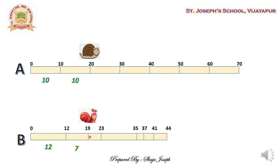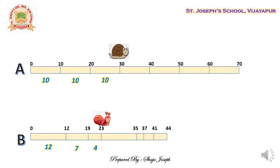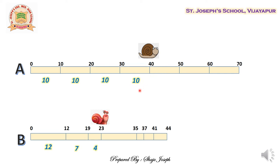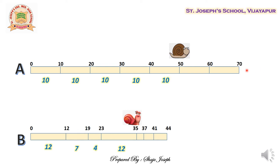In the next 15 minutes, snail A travels again from 20 to 30 meters — a 10-meter difference — whereas snail B moves from 19 to 23 meters, covering only 4 meters. Again in the next 15 minutes, A covers 10 meters and B covers 12 meters. Please observe this pattern as they continue until they reach 80 and 44 meters respectively.